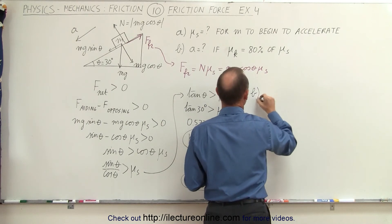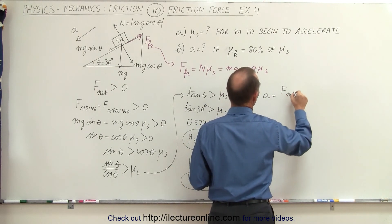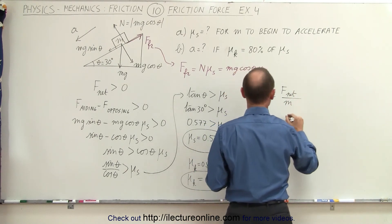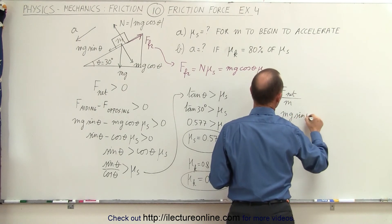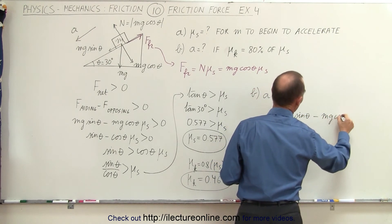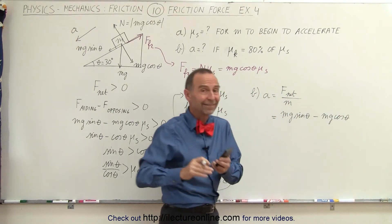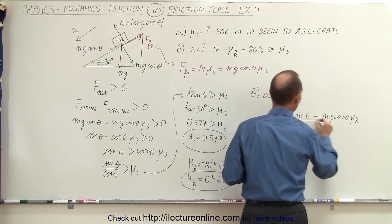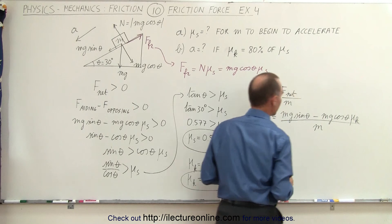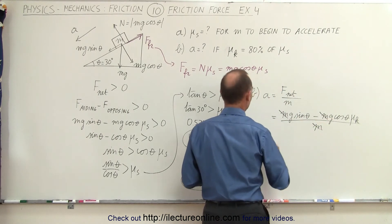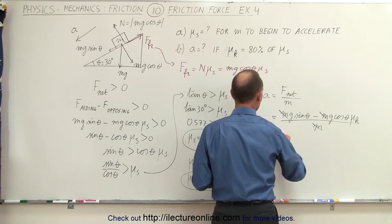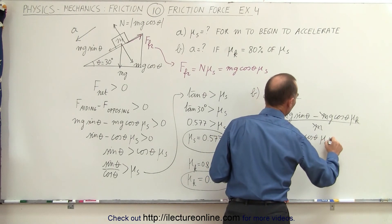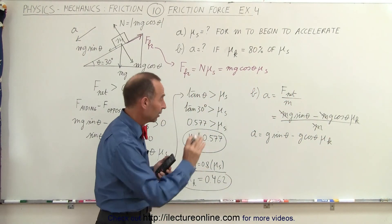For part b, the acceleration is equal to the net force divided by the mass. The force aiding is still mg sine of theta, and the force opposing is mg cosine of theta, but instead of mu sub s we now use mu sub k because the object is sliding. Dividing by the mass m, all the m's cancel out, and we have acceleration equal to g sine theta minus g cosine theta times mu sub k.